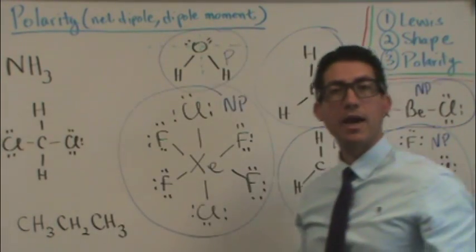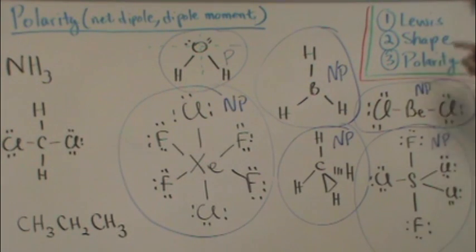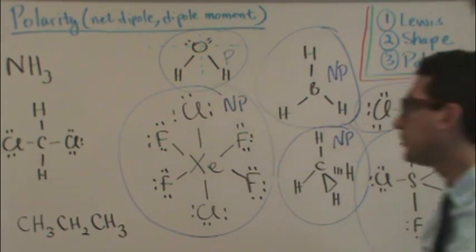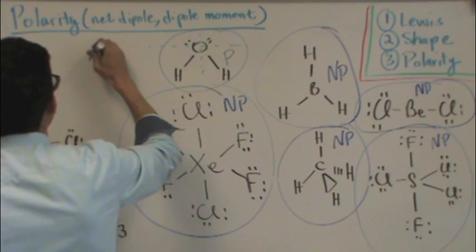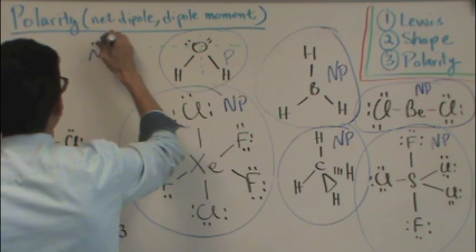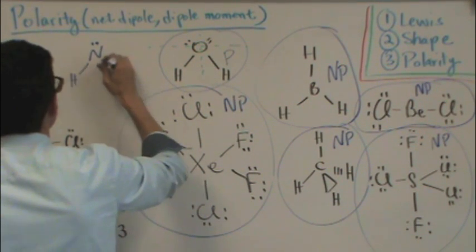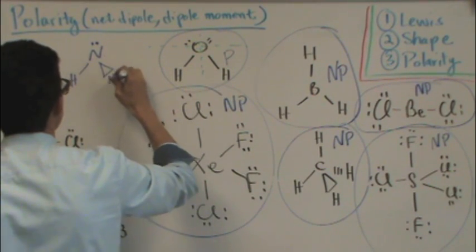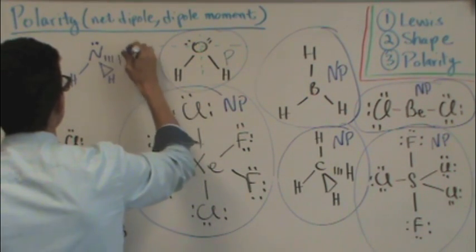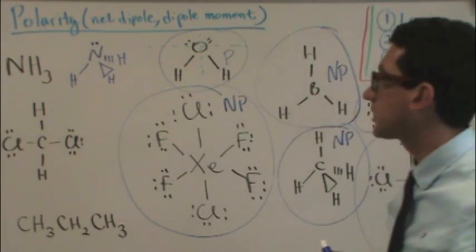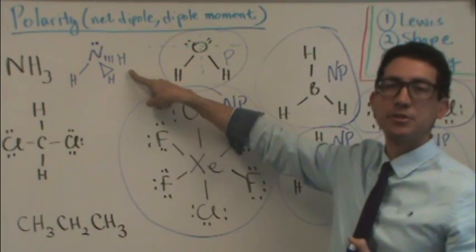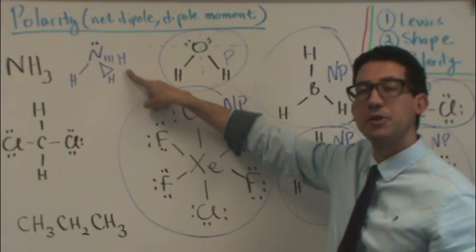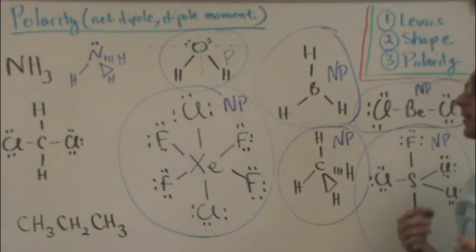NH3. Notice what happens in this example. I did not draw the Lewis diagram, nor did I draw the shape. Assuming that you can do that, I will just draw it out for you. N will have a lone pair on it. And thus a total of four groups with the three hydrogens. Its electronic shape is tetrahedral, but its molecular geometry is trigonal pyramidal.